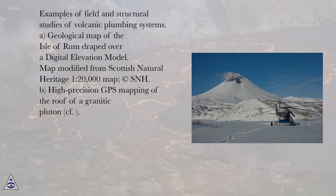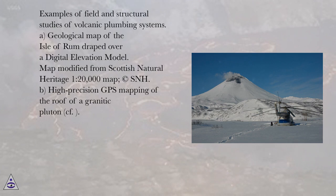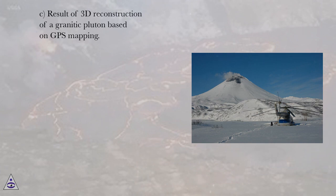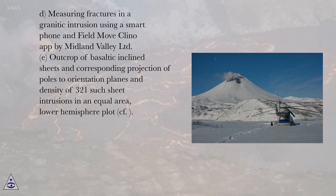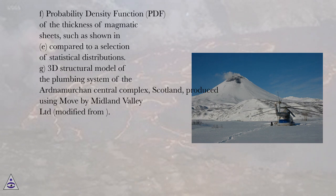Examples of field and structural studies of volcanic plumbing systems: (A) Geological map of the Isle of Arran draped over a digital elevation model, modified from Scottish Natural Heritage 1:20,000 map. (B) High-precision GPS mapping of the roof of a granitic pluton. (C) Results of 3D reconstruction of a granitic pluton based on GPS mapping. (D) Measuring fractures in a granitic intrusion using a smartphone and Field Move Clino app by Midland Valley Limited. (E) Outcrop of basaltic inclined sheets and corresponding projection of poles to orientation planes and density of 321 such sheet intrusions in an equal area, lower hemisphere plot. (F) Probability Density Function (PDF) of the thickness of magmatic sheets compared to a selection of statistical distributions. (G) 3D structural model of the plumbing system of the Ardnamurchan Central Complex, Scotland, produced using Move by Midland Valley Limited.